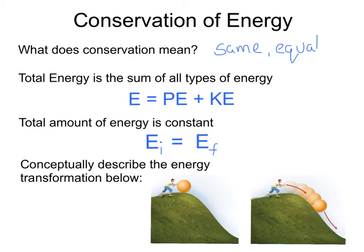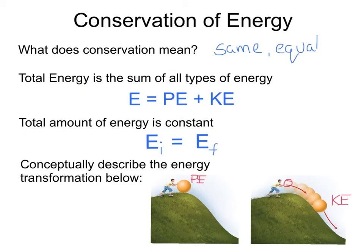Let's conceptually describe the energy transformation below. Here we see a person with a ball on top of a hill. Since it has height, it has potential energy. When we release the ball and let it roll down the hill, the potential energy is transformed into kinetic energy of motion. The amount of kinetic energy at the bottom of the hill will be the same as the potential energy at the top, since the total amount of energy is constant or conserved.